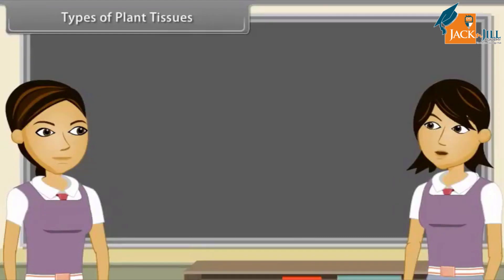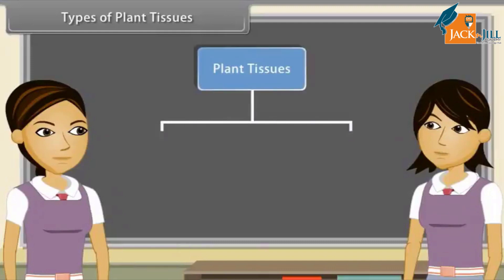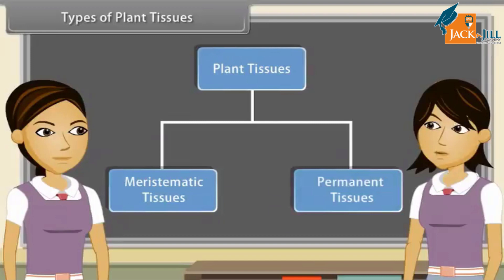On the basis of their dividing capacity, plant tissues are of two types: meristematic and permanent. Those tissues which divide continuously and help in increasing the length and girth of plants are known as meristematic tissues. These are found only in growth regions of plants. Those tissues which are derived from meristematic tissues but have lost the power of division and have attained their definite forms are permanent tissues.